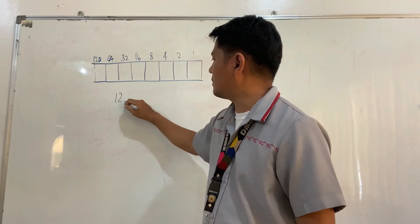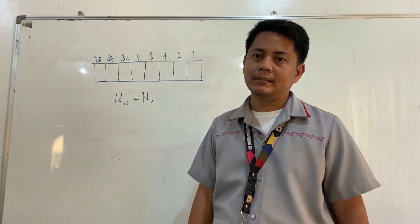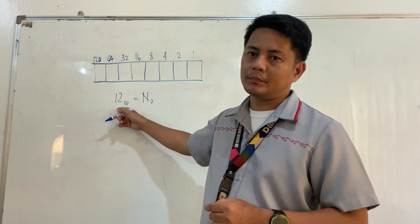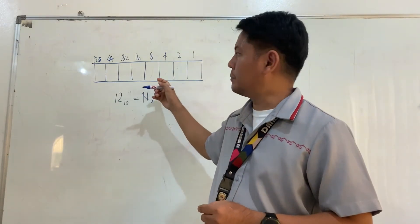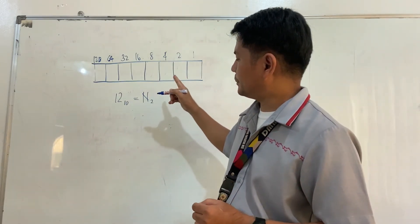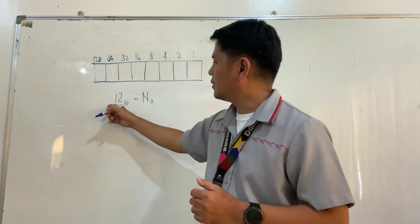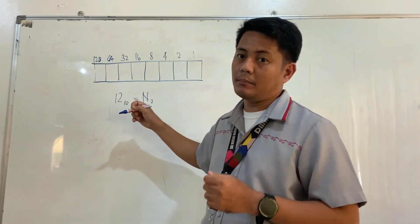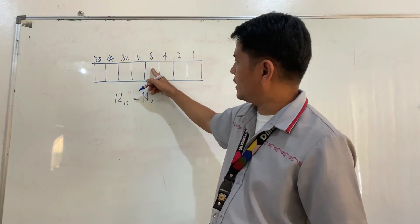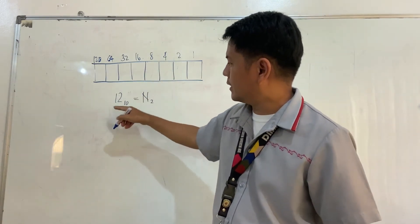So, 12 in decimal is equivalent to what number in binary? In converting 12 in decimal into its binary equivalent, we simply turn on the boxes to 1 which correspond to numbers whose sum equals 12. Since 8 plus 4 equals 12, we turn those boxes to 1.